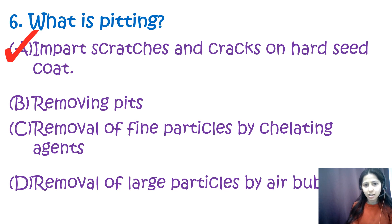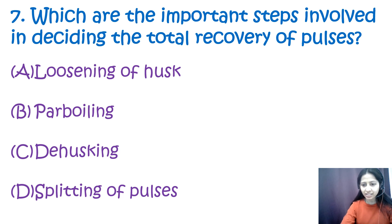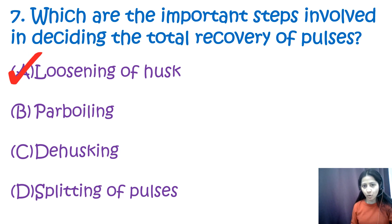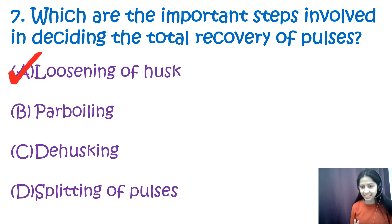Question 7: Which are the important steps involved in deciding the total recovery of pulses? Options are loosening of husks, parboiling, dehusking, and splitting. The correct option is A — loosening of the husk. This step decides the total recovery and quality of milled dal, and it is achieved by two methods: the wet method and the dry method.